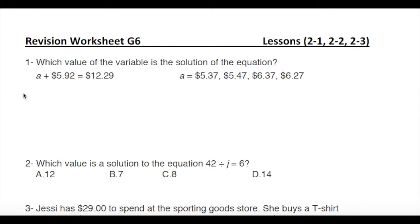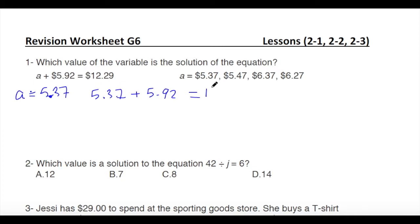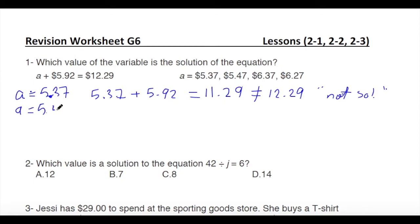If a equals 5.37, then 5.37 plus 5.92 equals 11.29, which does not equal 12.29 — not a solution. If a equals 5.47, then 5.47 plus 5.92 equals 11.39, also not equal to 12.29 — not a solution.